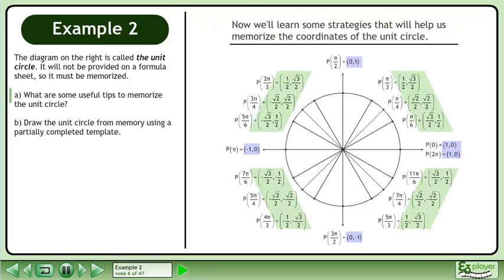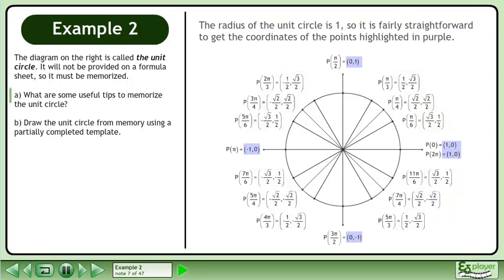Now we'll learn some strategies that will help us memorize the coordinates of the Unit Circle. The radius of the Unit Circle is 1, so it is fairly straightforward to get the coordinates of the points highlighted in purple. On the positive x-axis, at an angle of 0 radians, we have the coordinates.